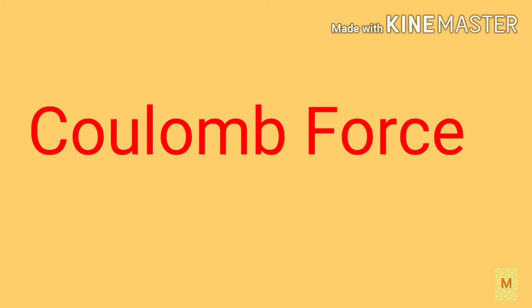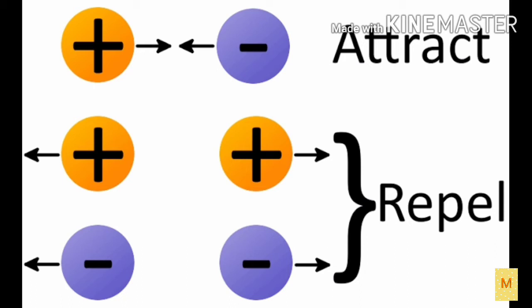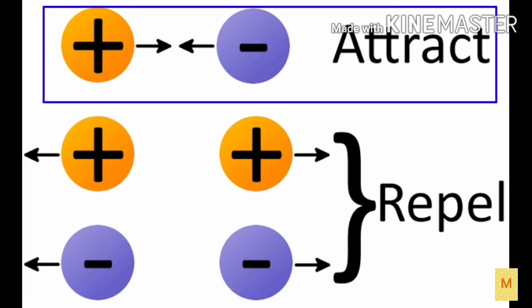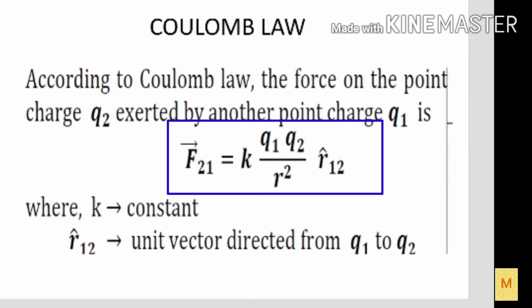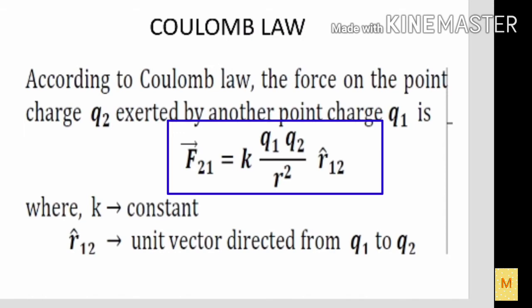Next one is Coulomb force. What is meant by Coulomb force? It tells about the force between two charges. If the two charges are similar, then the force between them will be repulsive. If the two charges are dissimilar, then the force between them will be attractive. According to Coulomb's law, the force of attraction or repulsion between two point charges is directly proportional to the product of the charges and inversely proportional to the square of the distance between them, where k is the proportionality constant and r̂₁₂ is the unit vector directed from charge q1 to charge q2.